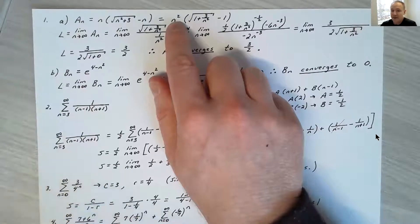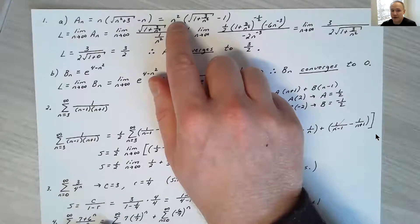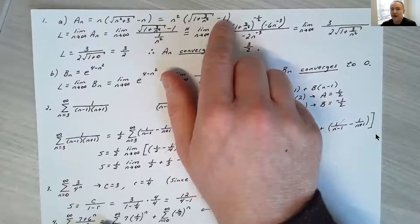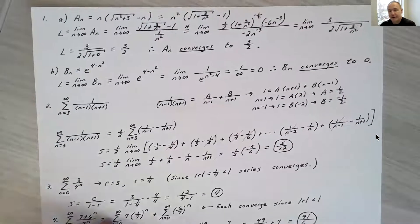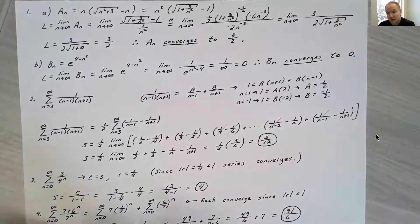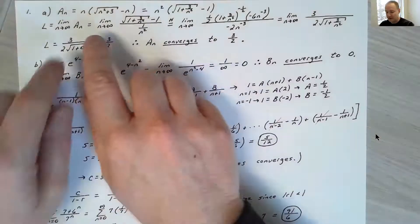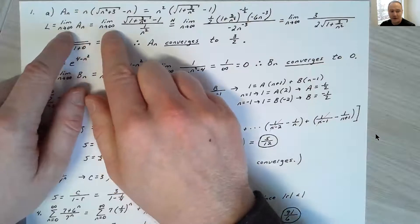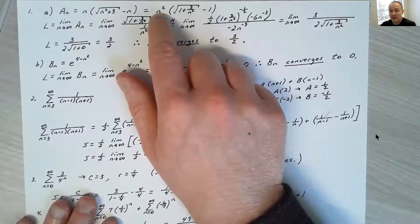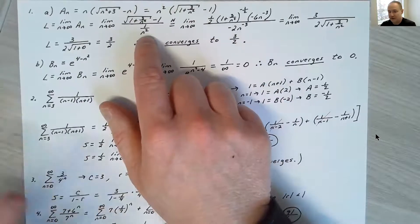This is still indeterminate because as n goes to infinity, the n squared term goes to infinity, and the square root of one minus one is zero — so it's infinity times zero, which is indeterminate. Anytime I have an indeterminate limit, I should use L'Hôpital. To use L'Hôpital, I need a fraction, going back to section 4.5 Calc 1 skills. So I rewrote the limit with the square root expression in the numerator and put n squared in the denominator as 1 over n squared.